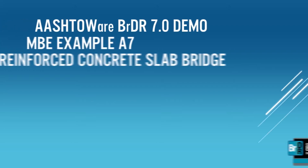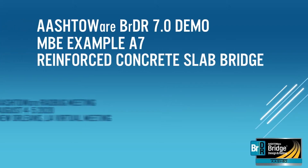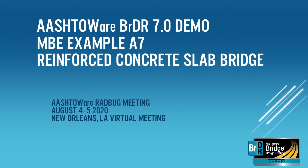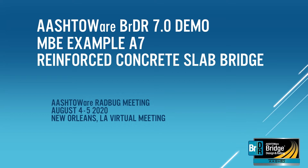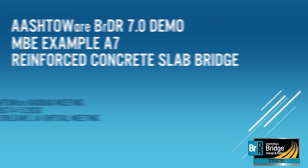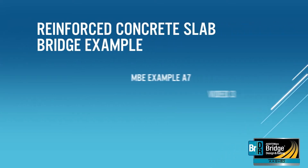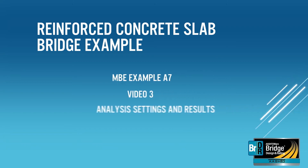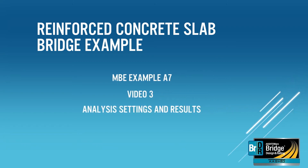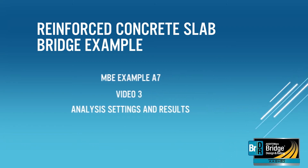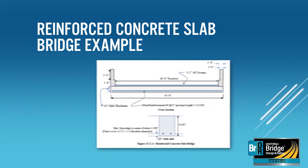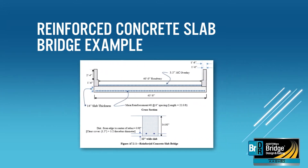In this section of the tutorial, we will analyze the reinforced concrete slab bridge superstructure we have just created from example A7 of the Manual for Bridge Evaluation. In video 3, we will show you how to use the Analysis Settings window to set a live load vehicle and turn on and turn off results output.